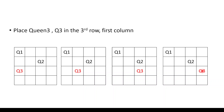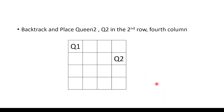Since no position works for Q3, we must backtrack and change the position of Q2. Q2 was in the third column, so we shift Q2 to the fourth column.